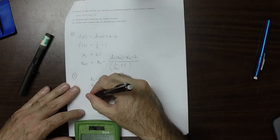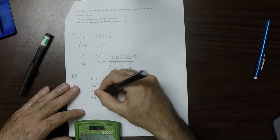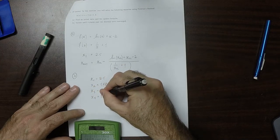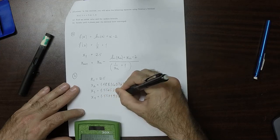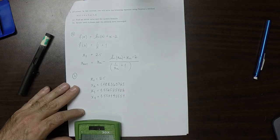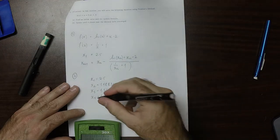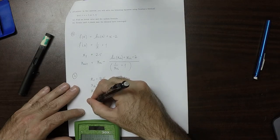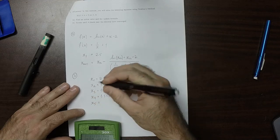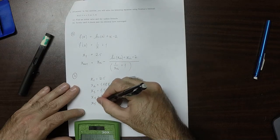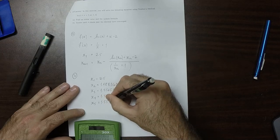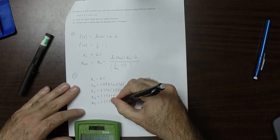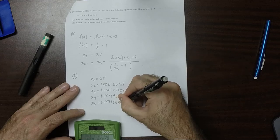So going to the next one, x4, is 1.557145551. And the next one, x5, is 1.557145599.